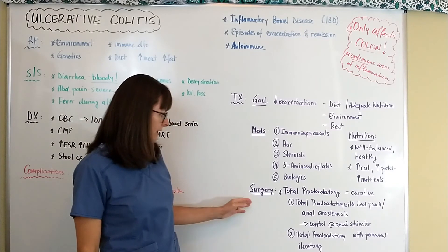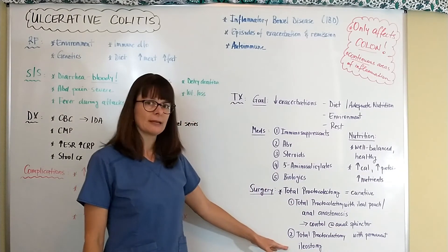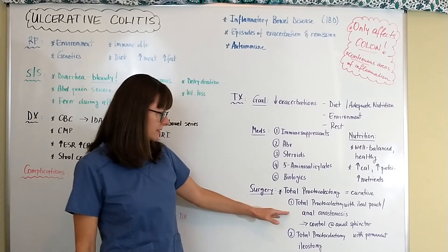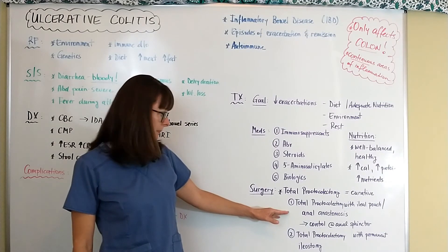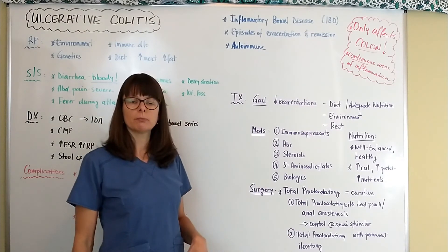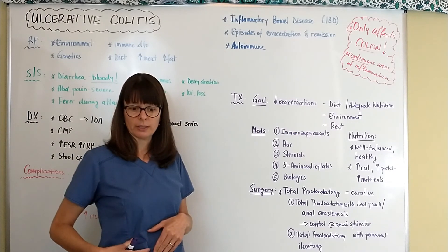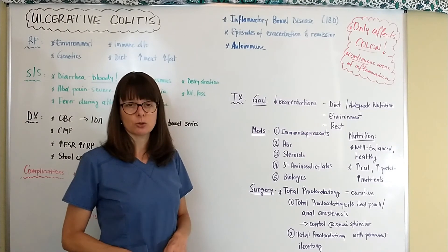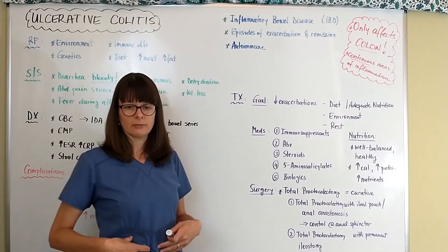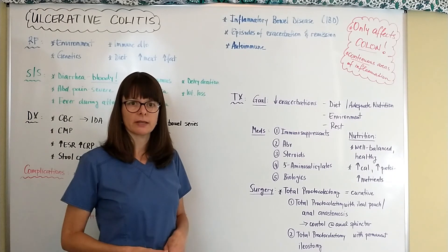The second option is a total proctocolectomy with a permanent ileostomy, used when the anastomosis has not been successful or is not attempted due to anatomical differences or other complications. In this case, the terminal ileum is brought to the surface of the abdomen, and the patient has an ileostomy bag — similar to a colostomy bag — where stool exits through the abdominal wall and is collected in the bag.